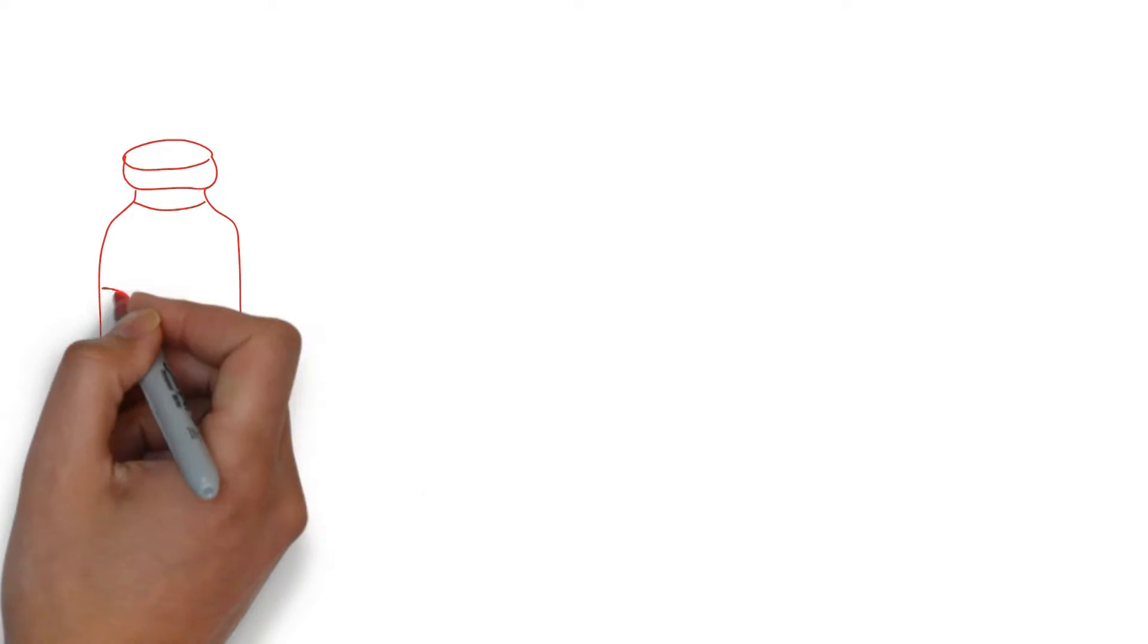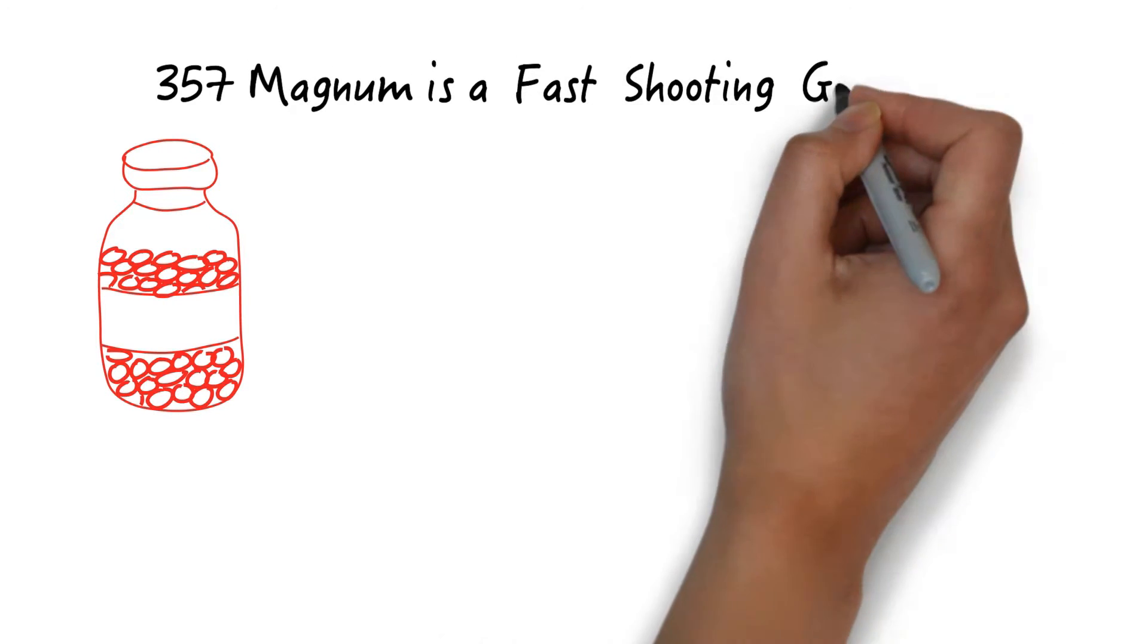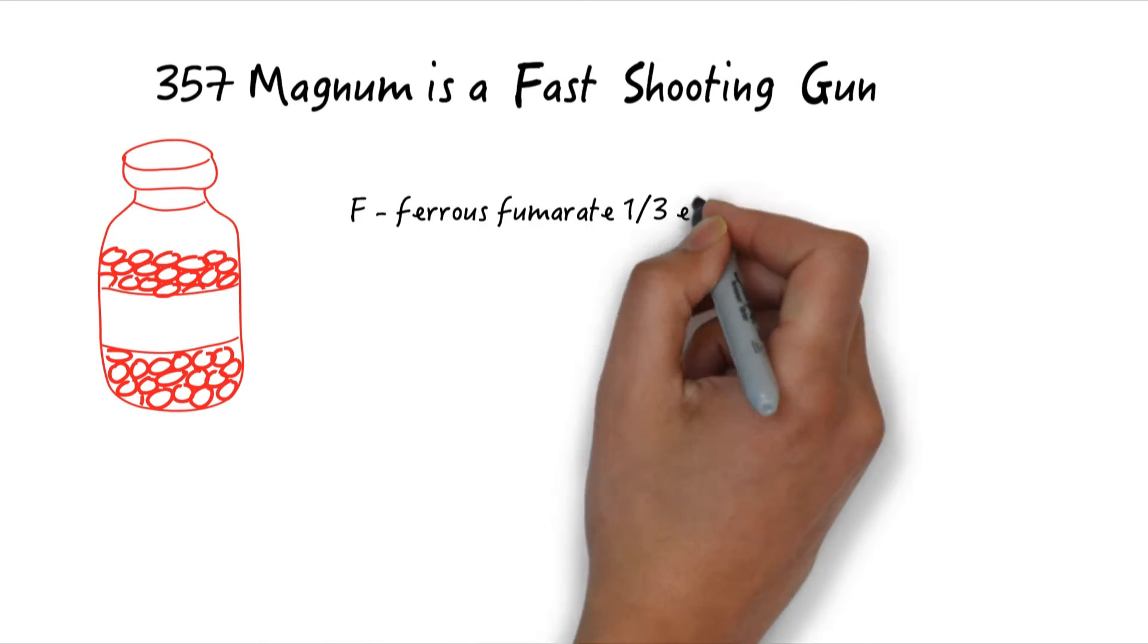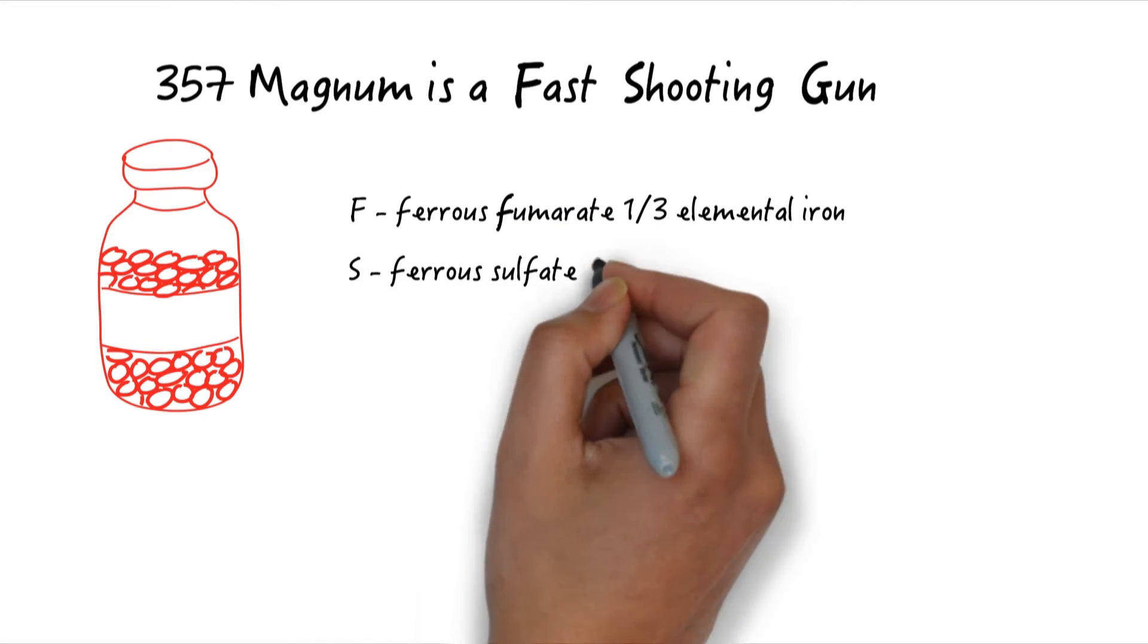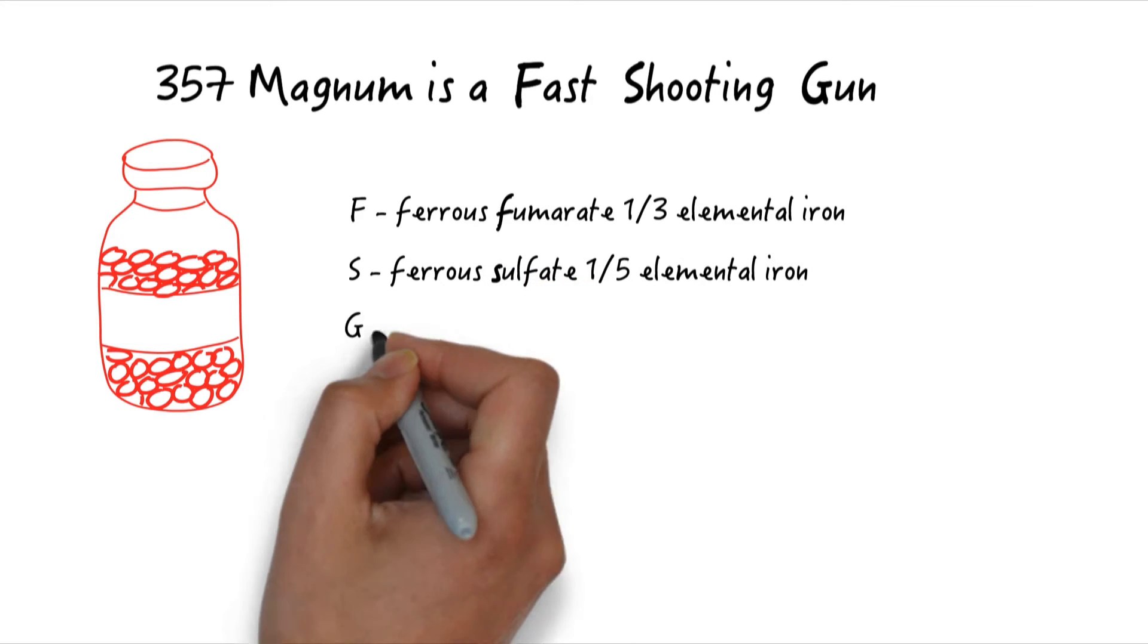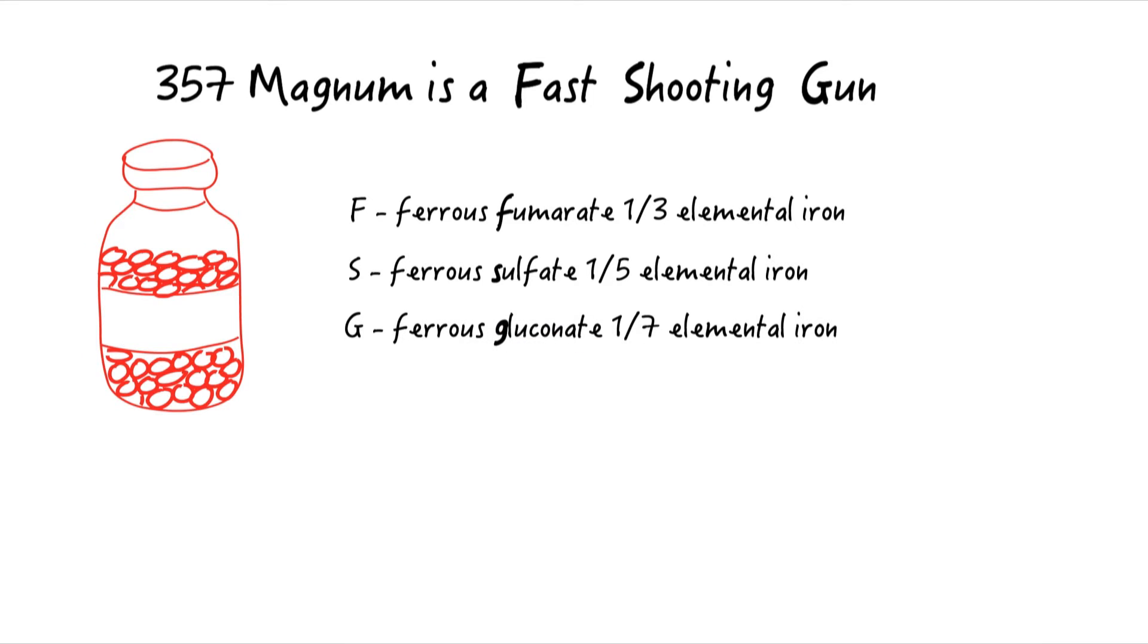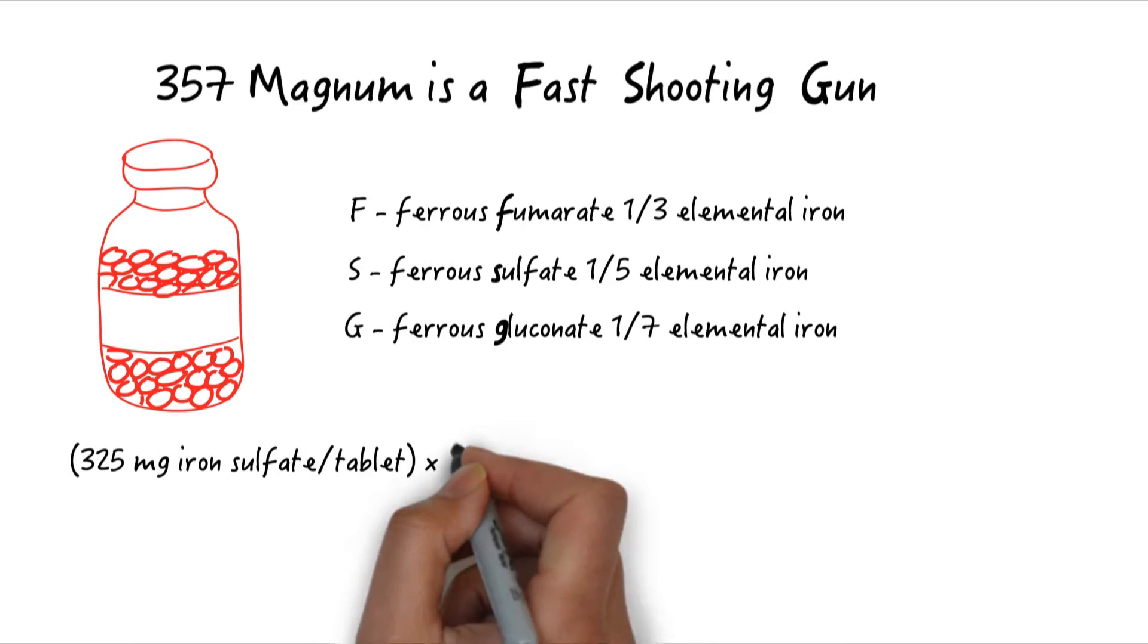Iron pills come in a number of forms. A useful mnemonic to remember is 357 magnum is a fast shooting gun. F is for ferrous fumarate which contains one-third elemental iron. S is for ferrous sulfate which contains one-fifth elemental iron. And G is for ferrous gluconate which contains one-seventh elemental iron.